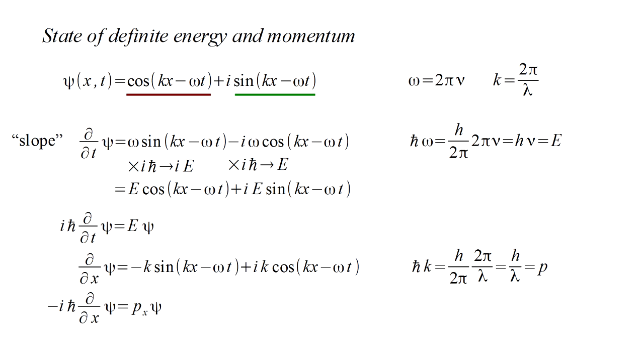So for a state of definite X momentum, minus I H bar slope in X of the wave function produces the X momentum times the wave function. And we can do the same thing for the Y and Z coordinates.